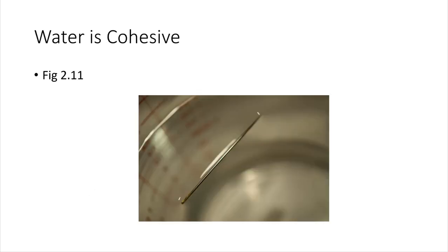Another special property resulting from the polarity of water is the fact that it is cohesive. Just looking at this picture here, what we're looking at is a needle that's floating on top of some water. Why is it floating? Why doesn't it just sink down into the water? Well, it's because water is cohesive. Water likes to stick to itself.